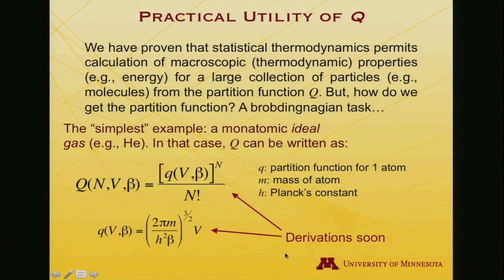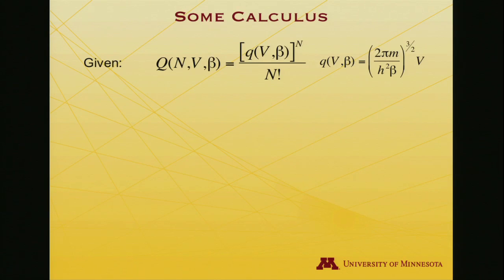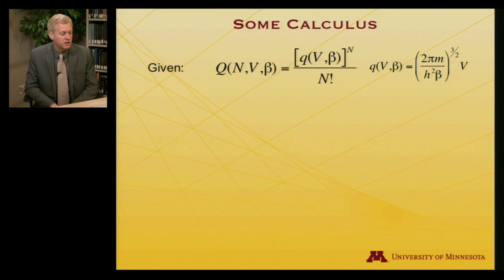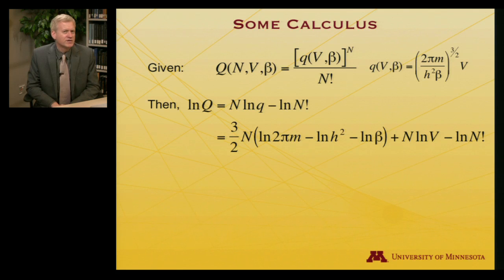I'm actually going to derive these not too long, but for now, just take my word for it. I want to see what we can do with them given this form for the partition function. We're going to do a little calculus again. Here are the two forms for the atomic partition function and the ensemble partition function capital Q. What I want to do is work with log of capital Q. When I take the log of this expression, I get n times log q minus log of N factorial.